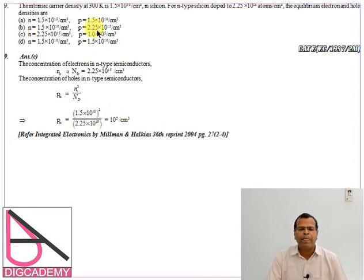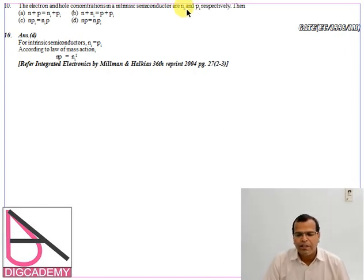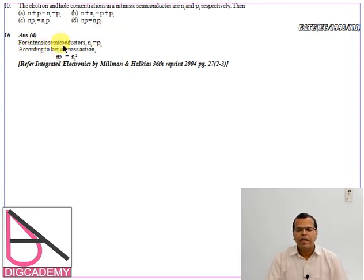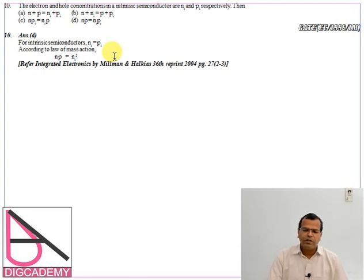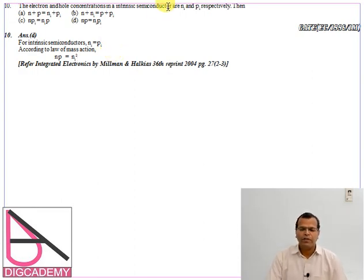For an intrinsic semiconductor, electron and hole concentrations are both equal to Ni, so n = p = Ni. According to the law of mass action, n × p = Ni². These are the questions which have appeared from the law of mass action. The questions are very simple once you remember the formula and understand the basic concept. Wait for my next video where I will be discussing theories and questions from previous year exams.